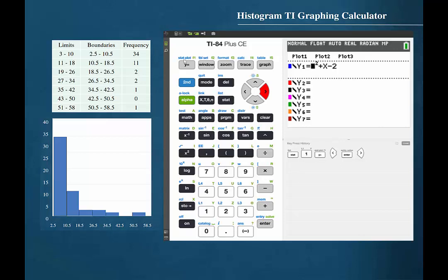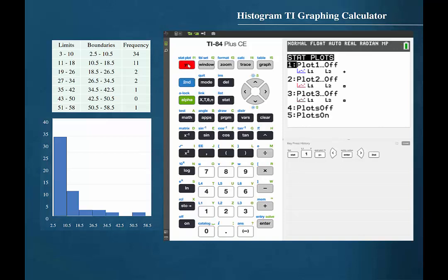Note that the second function of the Y equals button is STATPLOT. This calculator function allows us to create graphical displays of data such as a histogram. So press 2nd STATPLOT. Let's access the first STATPLOT by pressing 1.